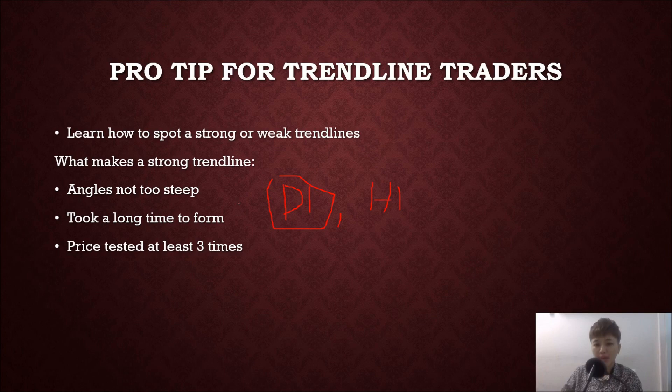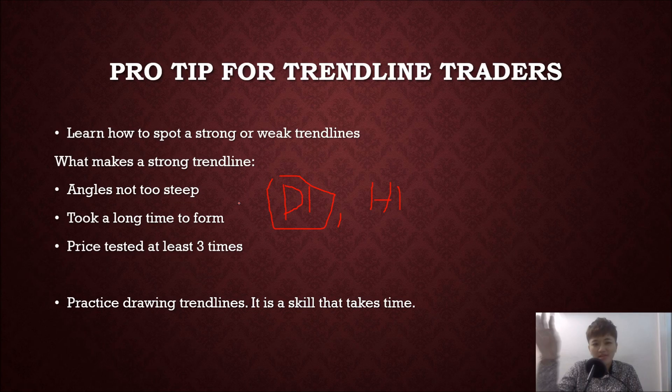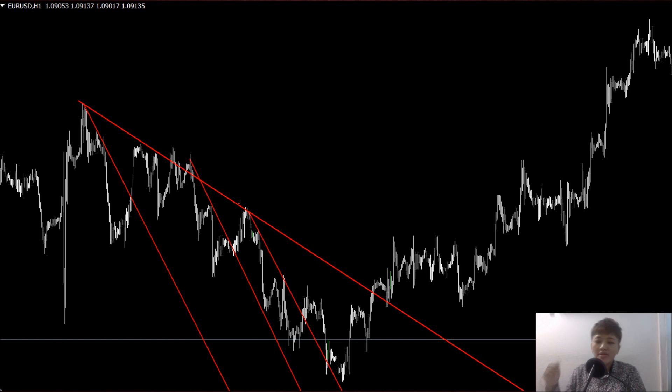Drawing trend lines is a skill that takes time. If in the first week you can't draw a trend line properly, you need to practice more — the best way to learn is through drawing, not just reading about it. Going back to the chart, you can see a major trend line, which some people call a stronger trend line. Within a major trend line you can also draw minor trend lines — shorter-lived ones.